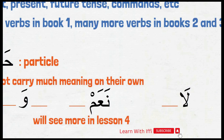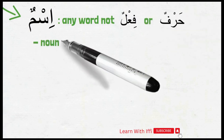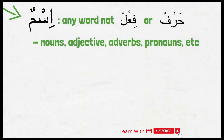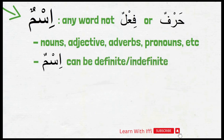The third category is ism. Any word that is not fi'al or harf will be ism. This includes nouns, adjectives, adverbs, pronouns and many more in English. They are all ism in Arabic because they all have similar characteristics. For example, all ism may carry attributes like definite or indefinite. We cannot say fi'al or harf is definite — definiteness is a special characteristic of ism only.